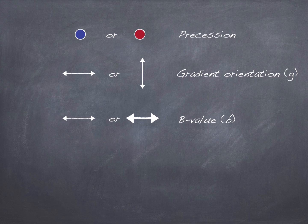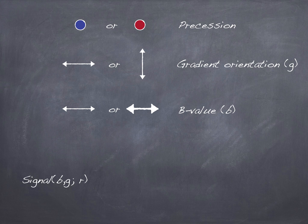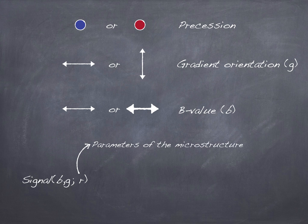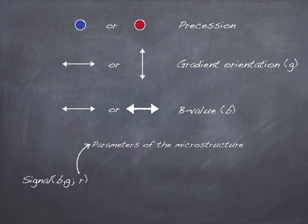How do we move from diffusion-weighted images to a model of the microstructure? If I know the microstructure, the b-value, and the gradient orientation, I can model and predict what the signal is going to be — like predicting the sound the box will make if I know what is in it. By acquiring diffusion images with different b-values and different gradient orientations, I may be able to estimate the values of microstructure parameters at every voxel of the brain. You might ask how to handle all the combinations of parameters — different cell types, different axon orientations — but there is a great property of the diffusion signal that helps with this.